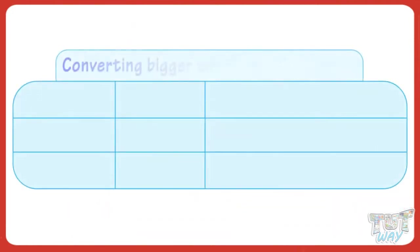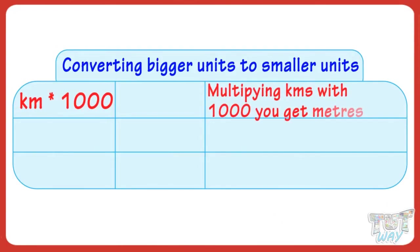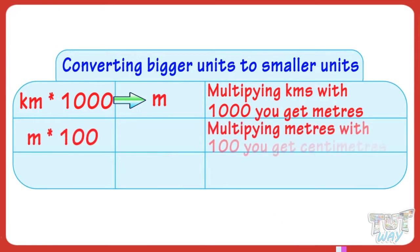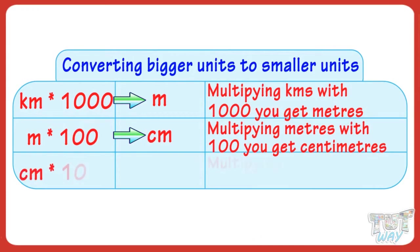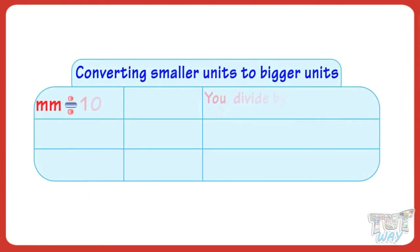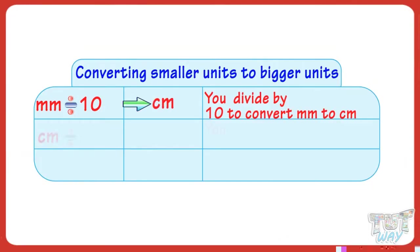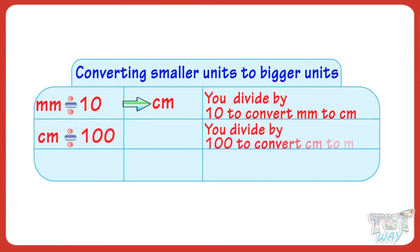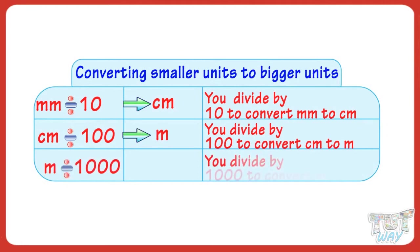So kids, let's revise what we learned. Multiplying kilometers by 1,000, you get meters. Multiplying meters by 100, you get centimeters. Multiplying centimeters by 10, you get millimeters. You divide by 10 to convert millimeters to centimeters. You divide by 100 to convert centimeters to meters. You divide by 1,000 to convert meters to kilometers.